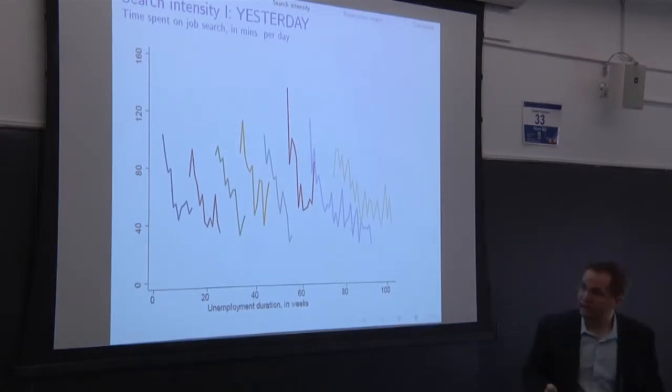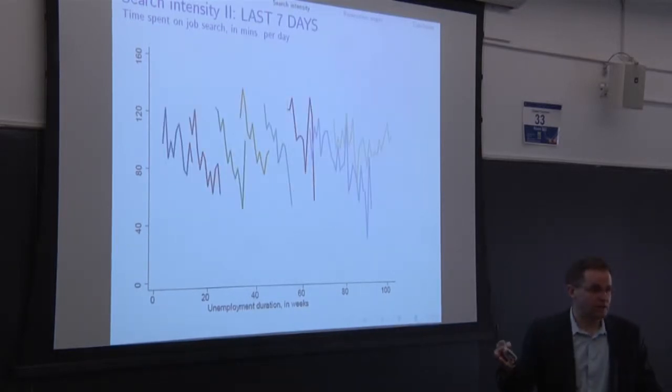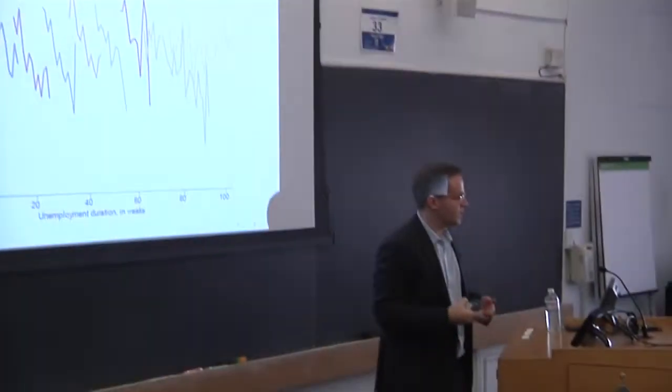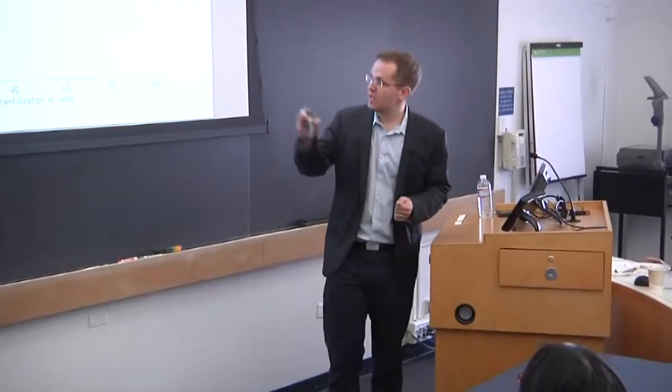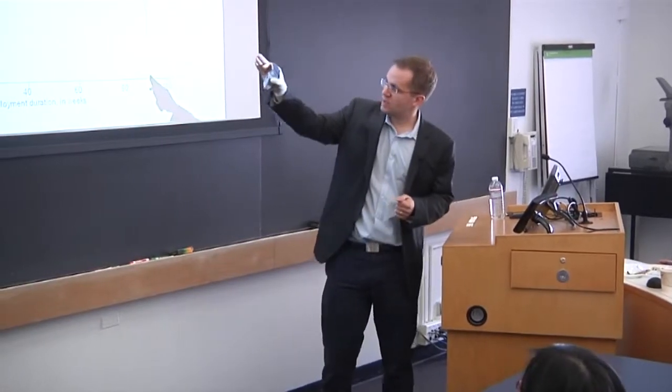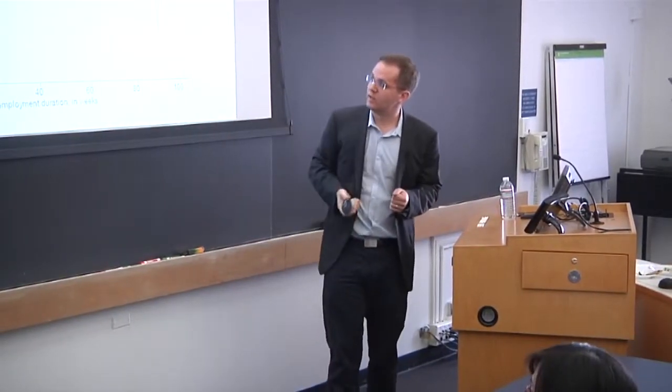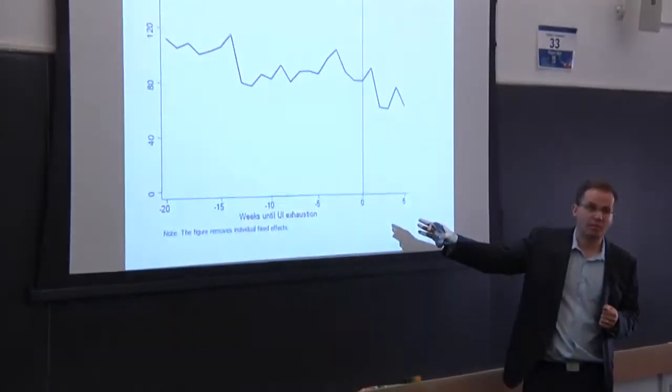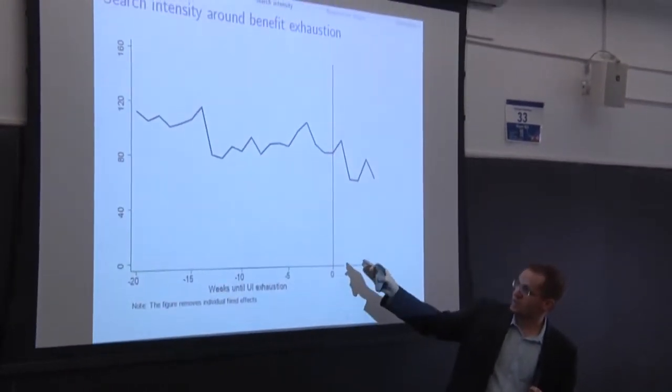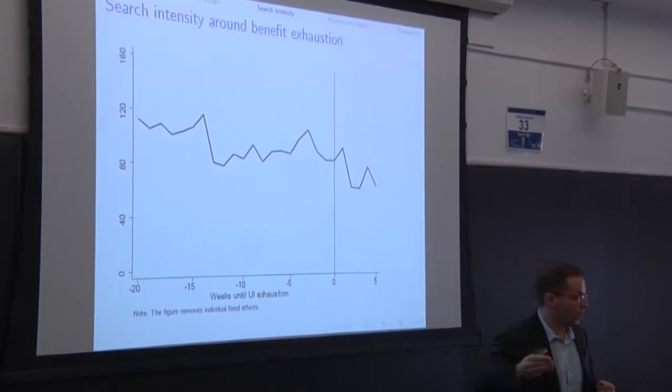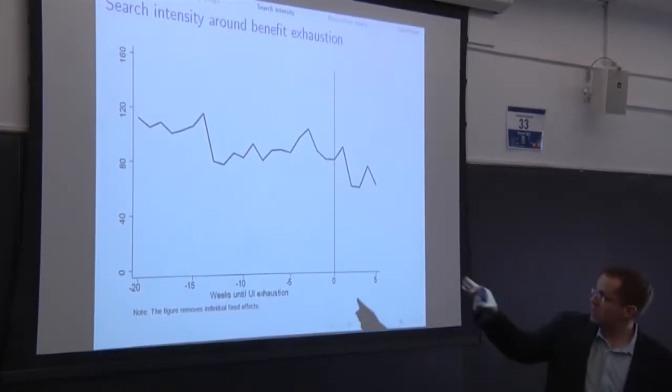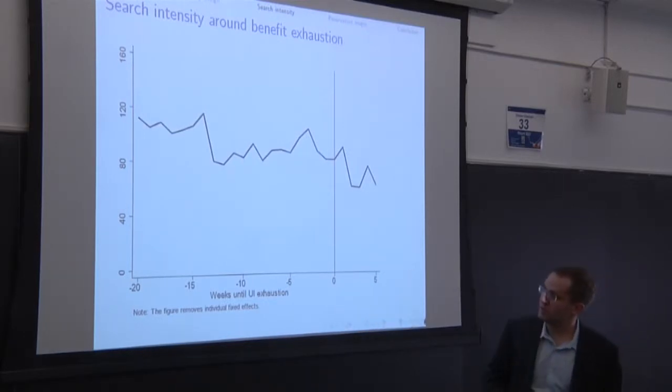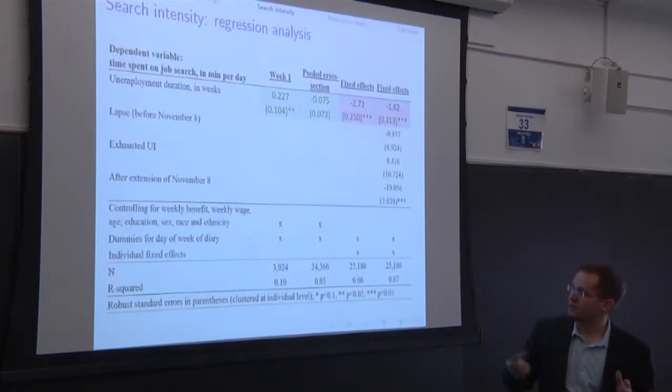So it's a relatively strong decline. If you look at the other measure of search intensity where we ask people directly what kind of methods they searched in and how long they searched in a given method, you see the very same patterns, this parallel downshifting lines. You can also look at, so we did have some people that exhausted unemployment benefits. So you can look at to what extent search intensity changes around that point when you finish your unemployment benefits. We don't see any particular pattern. It just seems to be kind of linearly decreasing.